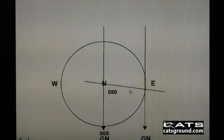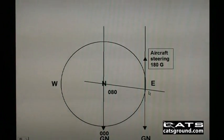Transfer the grid north reference to the aircraft position. The aircraft is steering 180 degrees grid. The 000 grid north reference is down the page. If you measure clockwise round from there 180 degrees, that's why the aircraft steering 180 degrees grid is drawn up here.